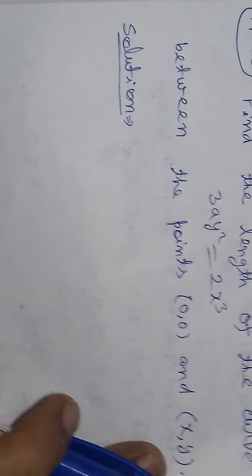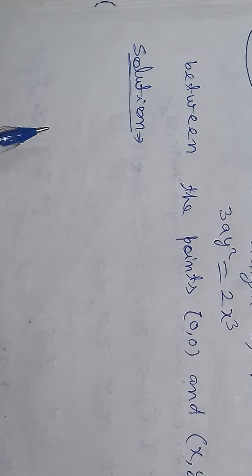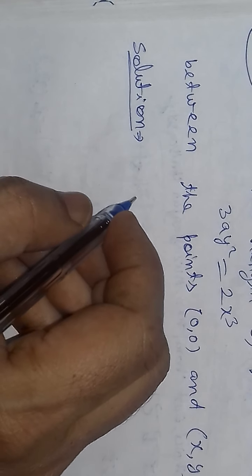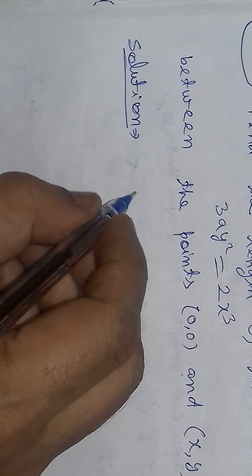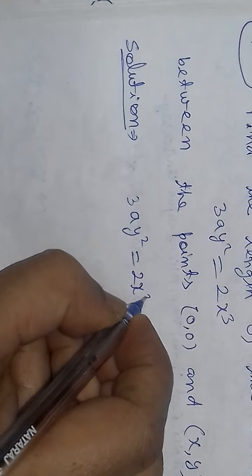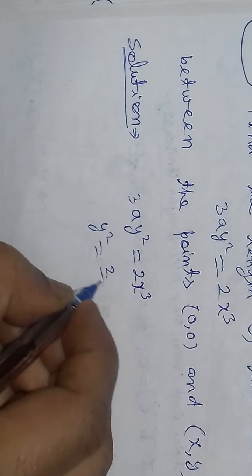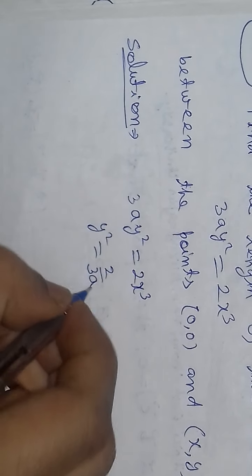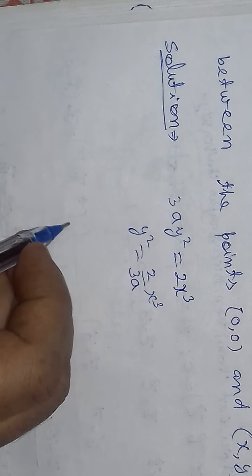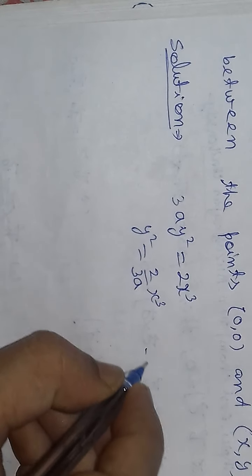To solve this, we will use the rectification formula. The curve is 3ay² = 2x³. We find the value of y²: y² = (2/3a) · x³. This is equation number 1.